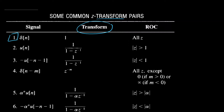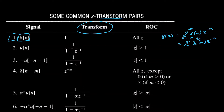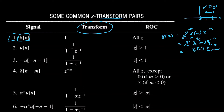Let us look into the first case: delta of n. We know that X of Z is simply a summation of X(n) times Z^(-n), summed from minus infinity to infinity. If X(n) is a delta function, then we have a summation of delta(n) times Z^(-n). From the property of the delta function, delta(n) is only nonzero at time instant zero, so any signal multiplied by delta(n) is available only at time zero. Hence delta(n) converts to Z^(-0), which is simply one. The summation yields only one value — delta(n) equals one — so X of Z equals one.